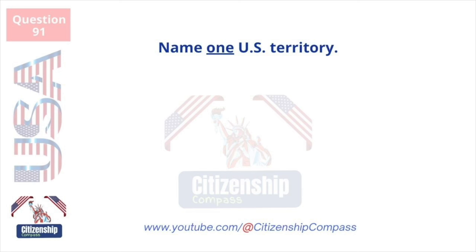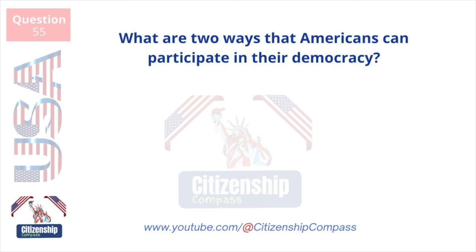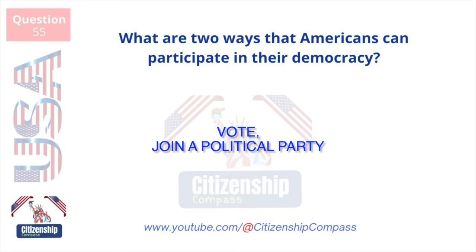Name one US territory. Guam. What are two ways that Americans can participate in their democracy? Vote and join a political party.